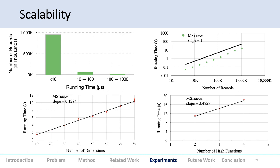For scalability, M-STREAM is scalable with increasing number of records, hash functions, and dimensions. This is the running time for processing one record. The running time for one record is less than 10 microseconds for around these many records. This frequency graph shows it's scalable.